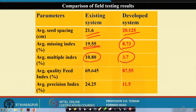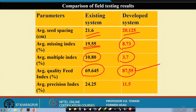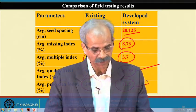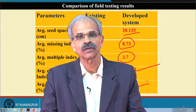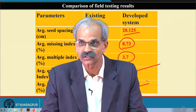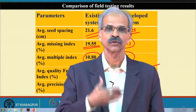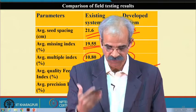In the mechatronic system, multiple index is very low compared to the existing system where multiple seeds fall due to skidding or varying soil moisture. The average quality feed index is very high at 87.5–88%. The average precision index improved from 24.25 in the existing system to 11.5, showing better accuracy. The developed system at IIT Kharagpur is an innovative one, and further work continues using embedded systems and other electronic devices.